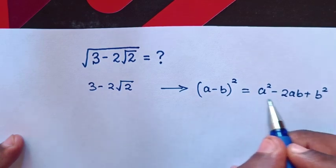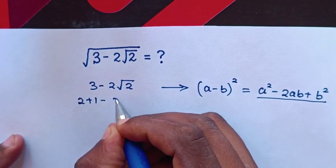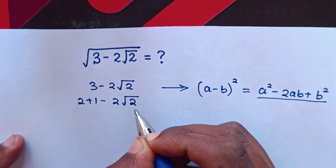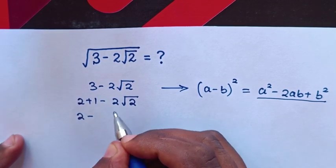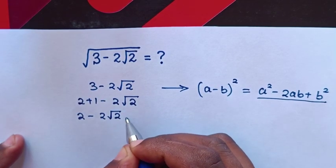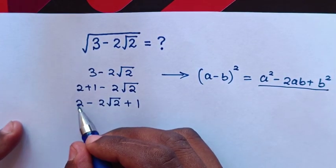From this expression to be like this one, this is 2 plus 1 minus 2 square root of 2 plus 1. Then, from this 2 into square,